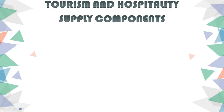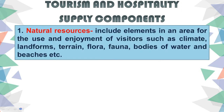Now, how about the supply components within tourism and hospitality? The first one is natural resources. Natural resources are elements found in our environment for the use and enjoyment of visitors — including climate, landforms like mountains, flora and fauna, bodies of water, beaches, and more. Without natural resources, tourists cannot enjoy their travel. For example, during summer season, people go to resorts and beaches.